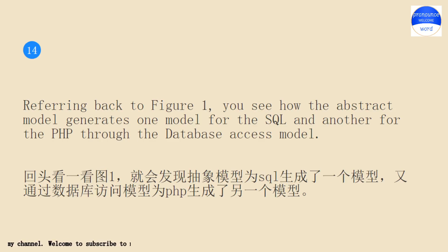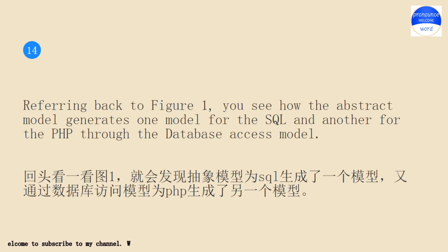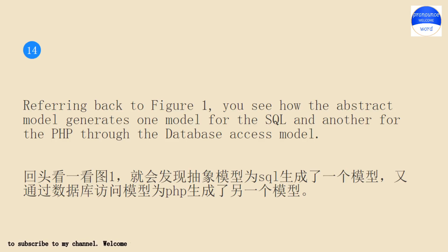Referring back to figure 1, you see how the abstract model generates one model for the SQL, and another for the PHP through the database access model.